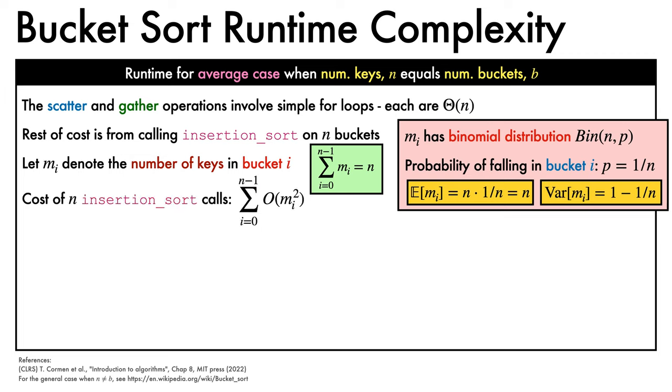Now, the cost of calling insertion sort, which has quadratic complexity, is the sum over each of the n buckets of big O of m_i squared.